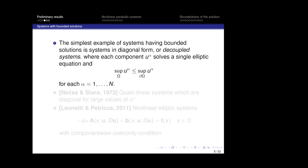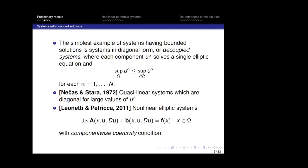The simplest example of systems having bounded solutions is systems in diagonal form or coupled systems where each component u_alpha solves a single elliptic equation. We remember the results of Nečas and Šarová for quasi-linear systems which are diagonal for large values of u_alpha, the results of Leonetti and Petricca or Tinedai in 2011 for non-linear elliptic systems with component-wise coercitivity conditions.